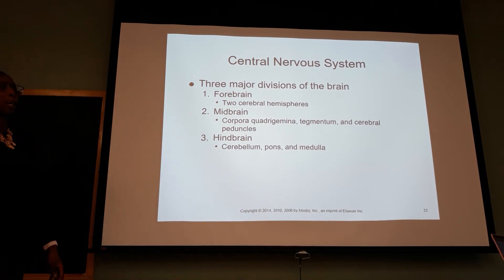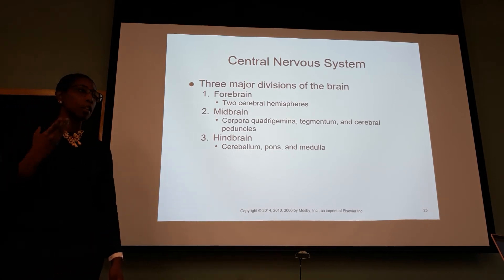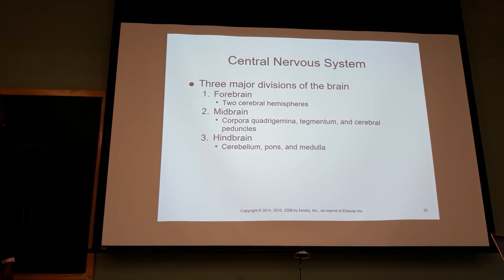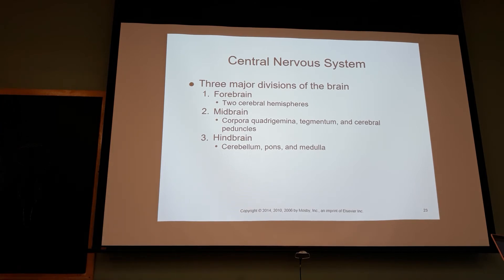No higher cortical function occurs in the brainstem. The brainstem has your cranial nerves and basically controls heart and lung functions. You don't want anything to happen to the brainstem. When we're dealing with real estate in the brain, you need to know what's prime real estate and what's not. The brainstem, when thinking about function, is prime real estate.